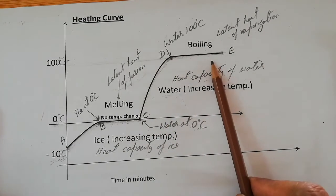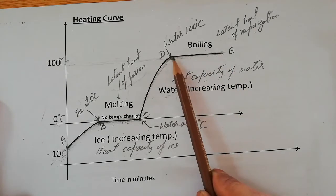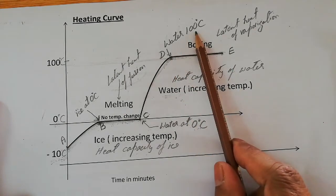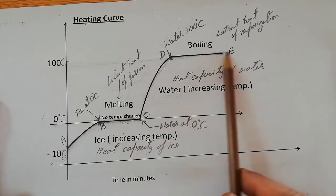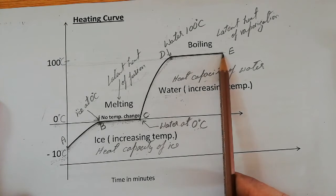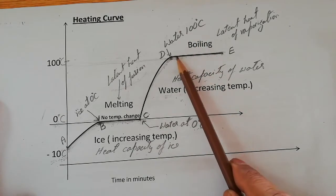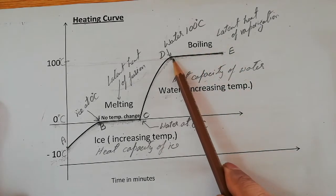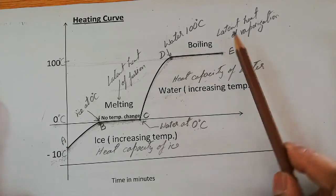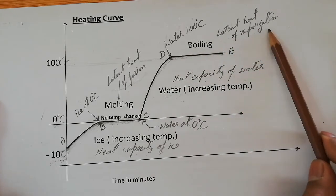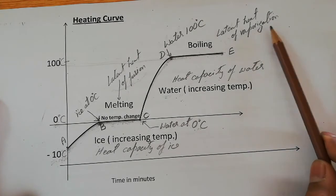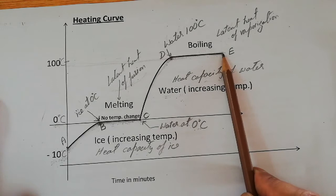The fourth portion of the graph is from D to E. The water has started boiling at 100 degrees Celsius, and now the temperature will remain constant. This horizontal line again shows that the temperature is constant at 100 degrees Celsius. The water is boiling, changing state from liquid to gaseous state. The heat absorbed by water during this portion can be calculated with the latent heat of vaporization, because no change in temperature is occurring during this interval.